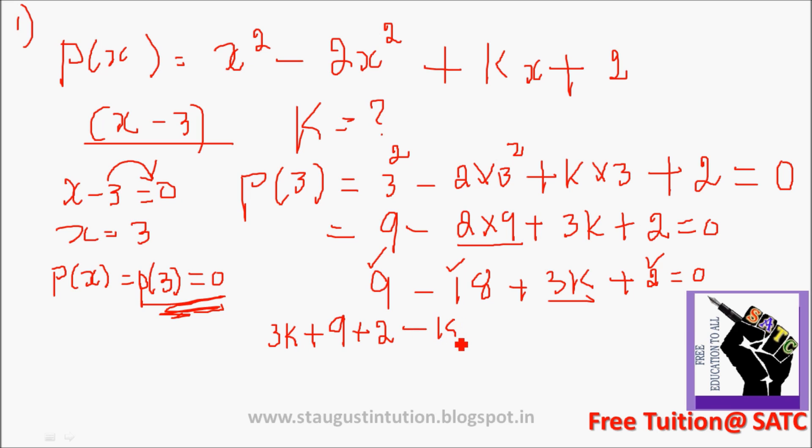If you do this, 27 minus 18 plus 3k plus 2. That's 9 plus 2 minus 18 equal to 0. So 3k plus 11 minus 18 equal to 0.